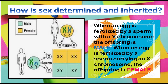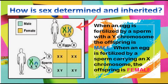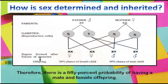How is sex determined and inherited? When an egg is fertilized by a sperm with a Y chromosome, the offspring is male. When an egg is fertilized by a sperm carrying an X chromosome, the offspring is female. Therefore, there is a 50% probability of having a male and a female offspring.